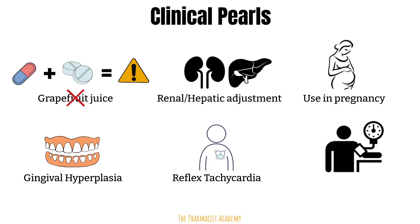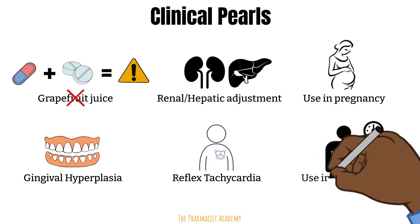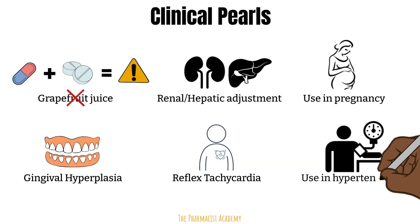When calcium channel blockers are used in hypertension, they can be used for patients with hypertension without comorbidities or those with hypertension and comorbidities such as CKD, diabetes, hyperlipidemia, etc. They are usually used in combination with ACE inhibitors and ARBs and/or diuretics.